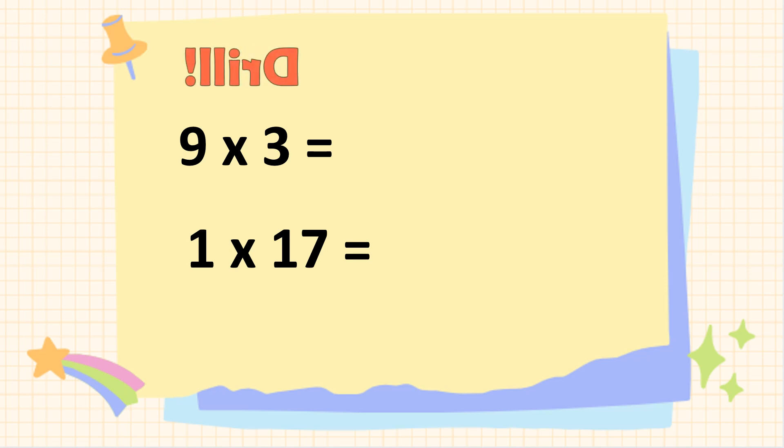Let's have another drill. Find the product of the following numbers. Let's see if your answer is correct. 9 times 3 is? Correct! 27. 1 times 17? Correct! It's 17. Good job, kids!